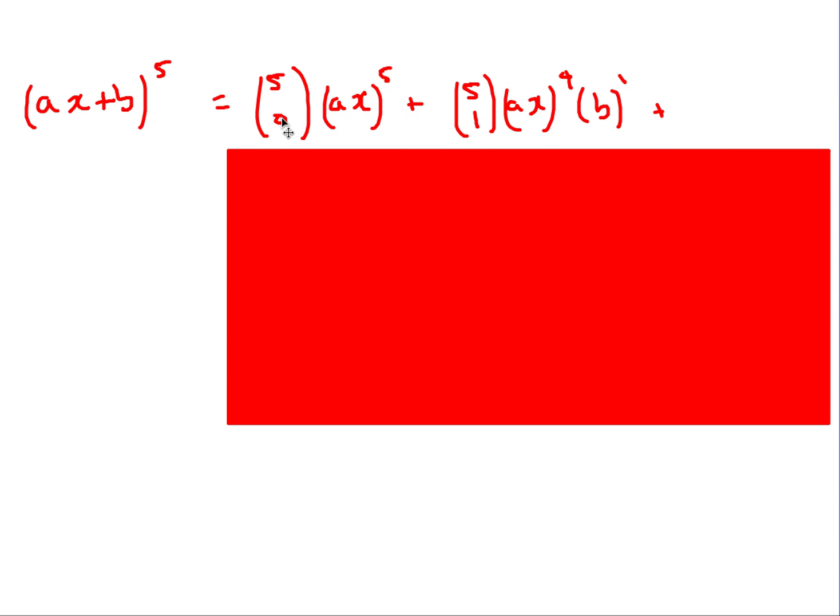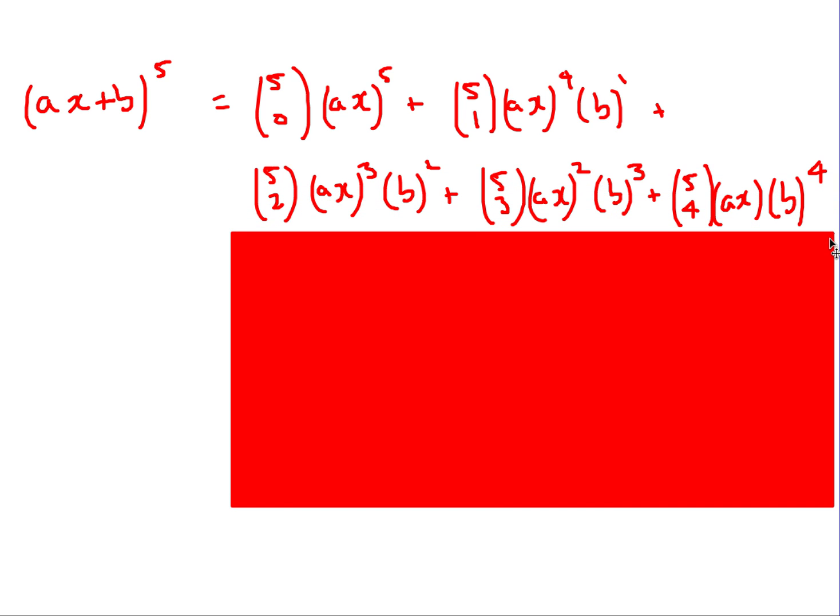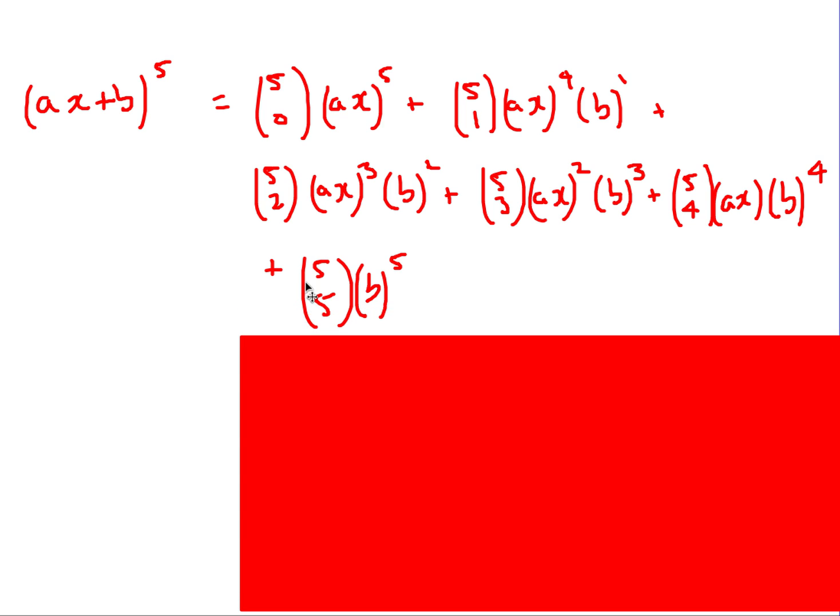First question is ax plus b to the power of 5. This really is to kind of just make sure that you understand the general pattern. I'll start with my pattern here, so 5 choose 0, ax to the power of 5. This is going to be b to the power of 0, so it's just going to be 1. The only thing that can go wrong here is forgetting to put the brackets in, so make sure you put your brackets around the ax, and it's going to be 5 choose 1, and then ax to the power of 4, and then b to the power of 1. And then the next one will be 5 choose 2, ax cubed, b squared. Next one, 5 choose 3, ax squared, b cubed. And 5 choose 4, ax to the 1, b to the 4, and then 5 choose 5, b to the 5. So that's the pattern, kind of the idea that we're going to be using.